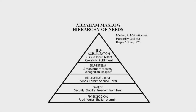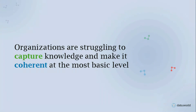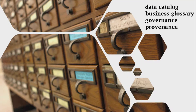Josh kind of stole my thunder on this, but it's a great analogy — Maslow's hierarchy of needs — where the pinnacle is a fully materialized, fully articulated, completely semantically aware knowledge graph. He pointed at the middle as where a lot of folks are. I would say the vast majority of organizations are way closer to the bottom of this pyramid — food and shelter, safety and security. Most organizations are struggling to capture knowledge at the most basic levels and are looking at things like data catalogs, business glossaries, and governance solutions.